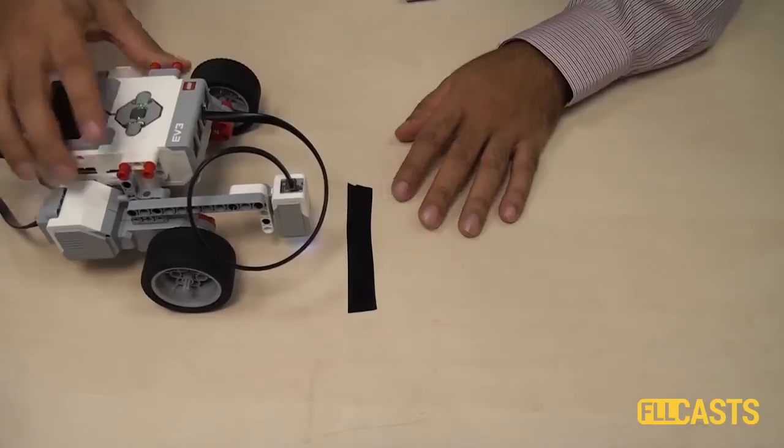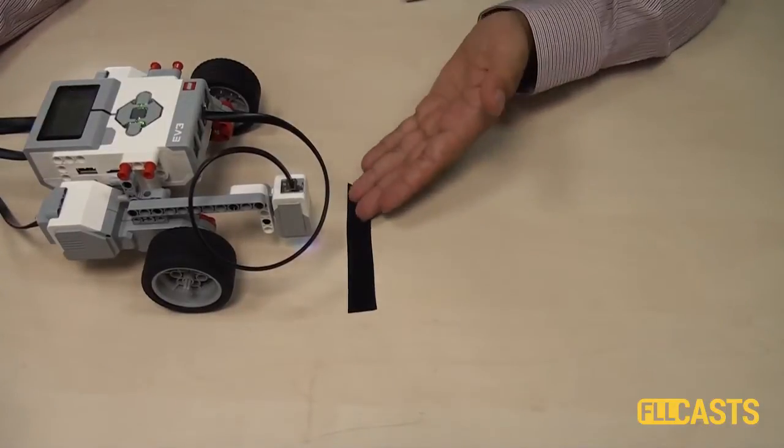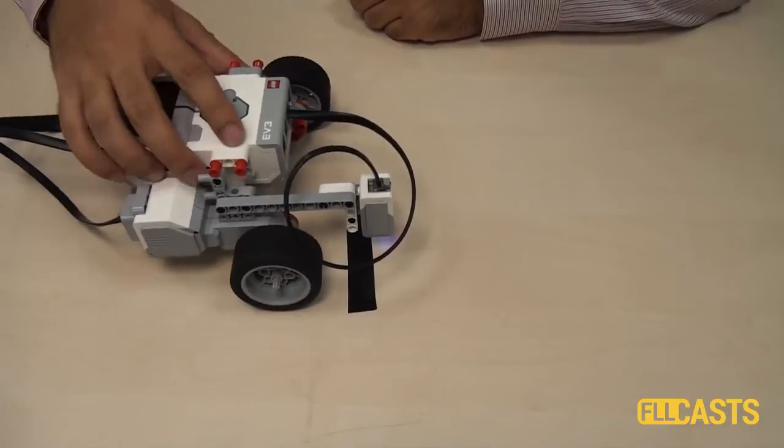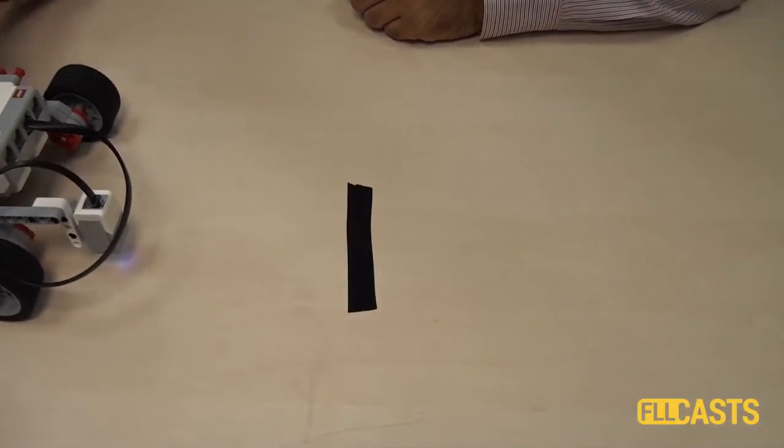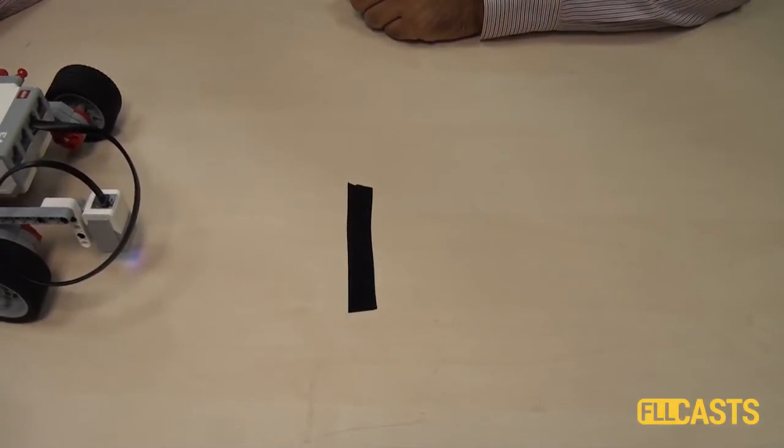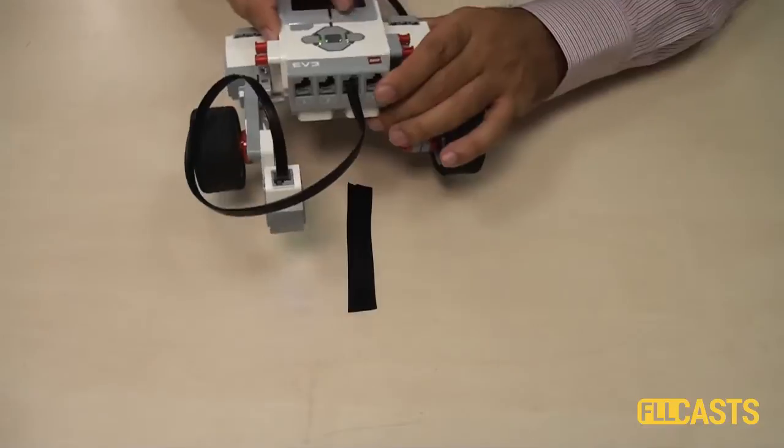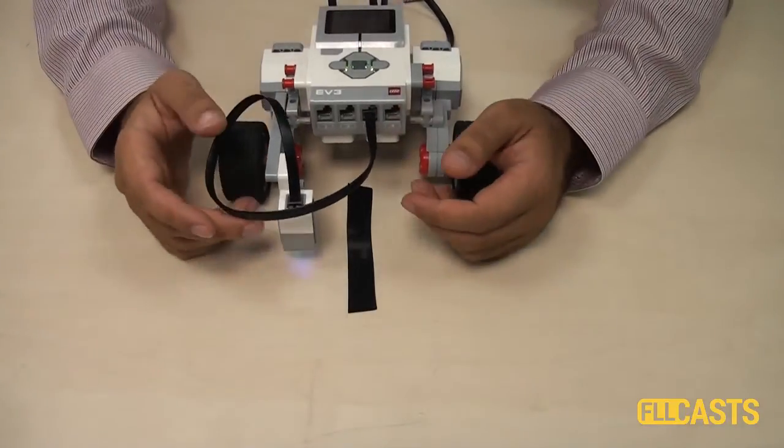And I can start the robot from different positions. For example, from here. Again, it stops on the black line or I could start it from here.